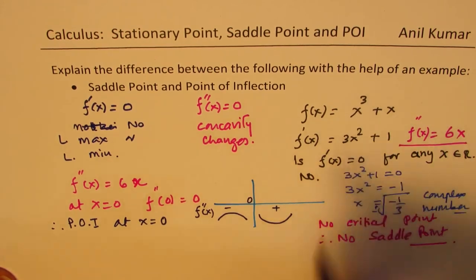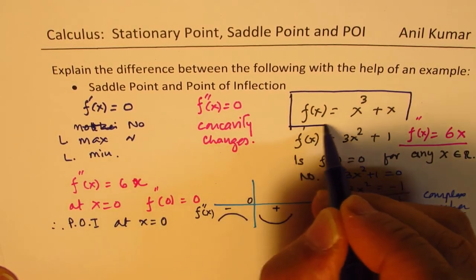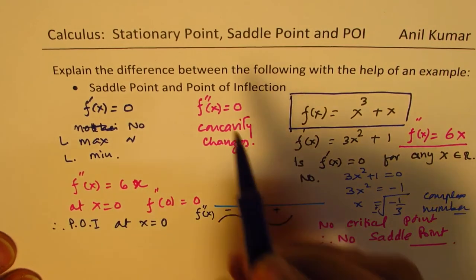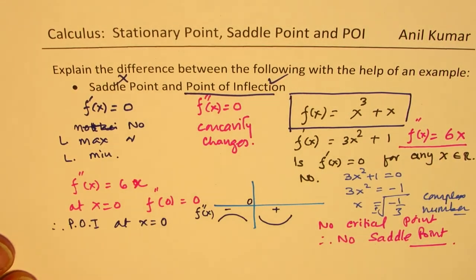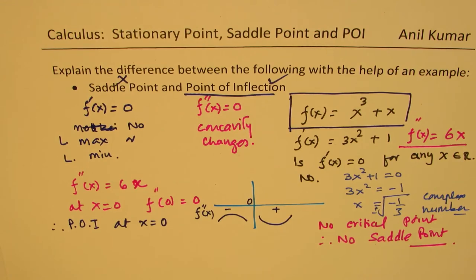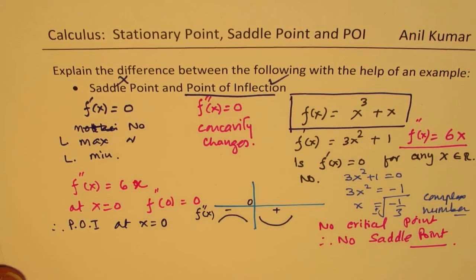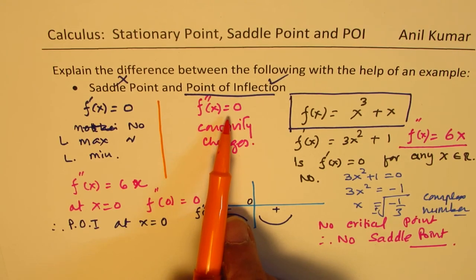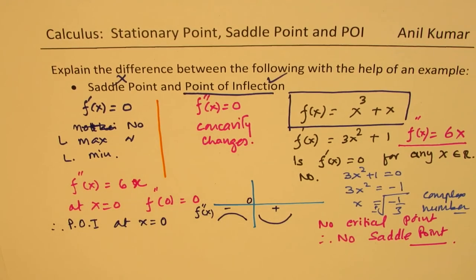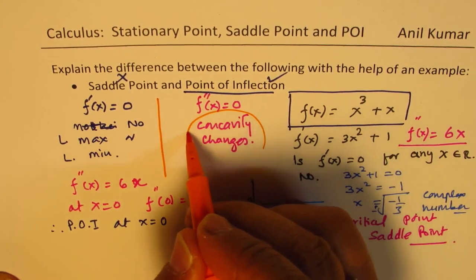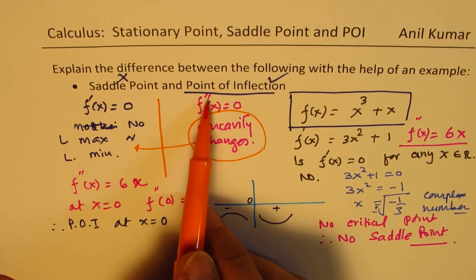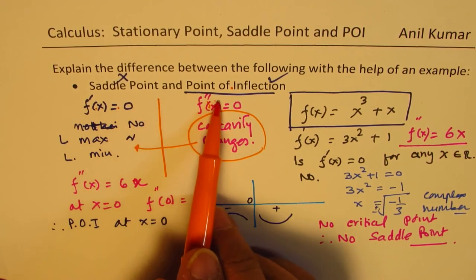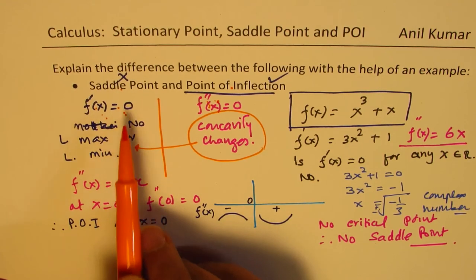For the given function f of x equals x cubed plus x, we do have a point of inflection but we do not have a saddle point. Therefore, it is possible to have a point of inflection without having a saddle point. They may look similar, but they are not — they are very different points. For a saddle point, we analyze the first derivative. For point of inflection, the second derivative. The concavity changes for both — that is common. However, the second derivative is zero for point of inflection, and the first derivative may or may not be zero. For a saddle point, the first derivative has to be zero.